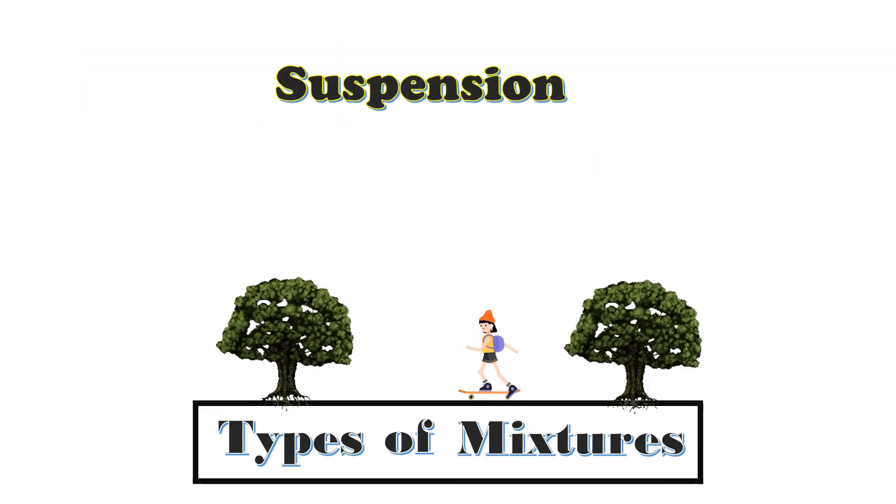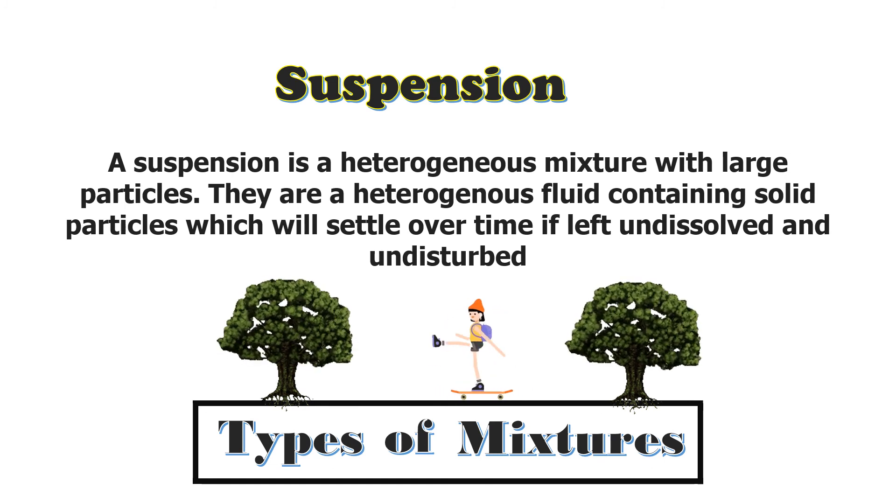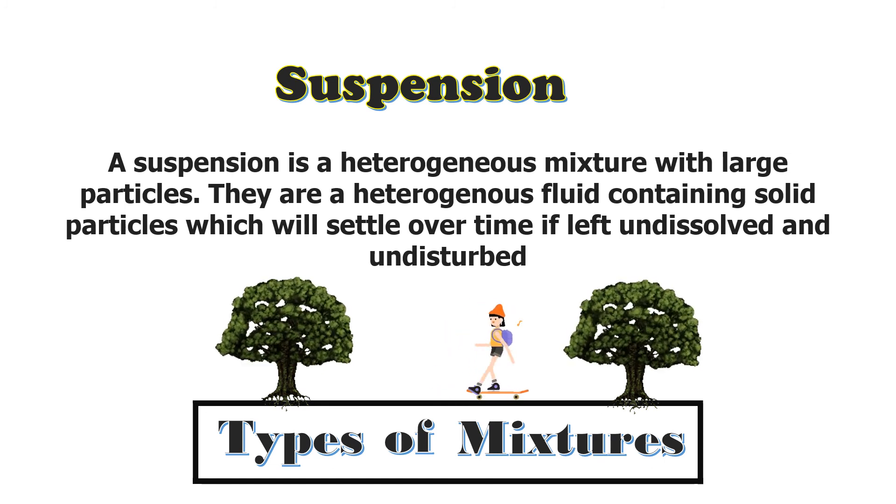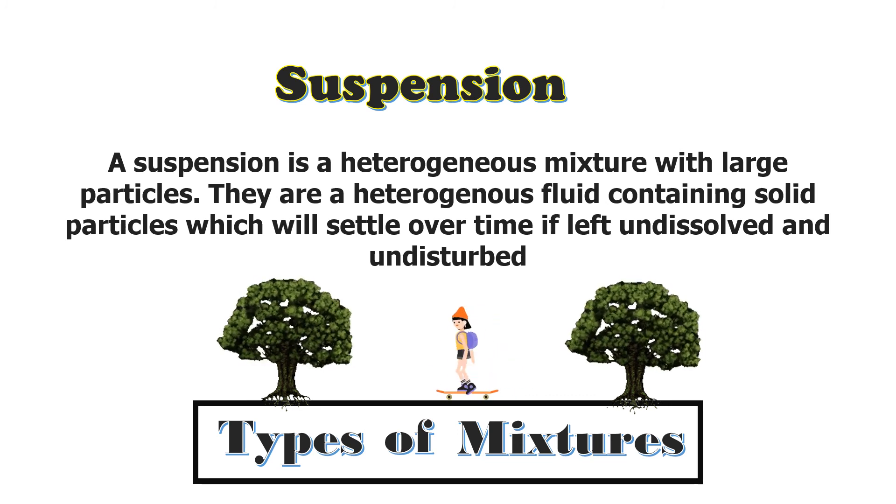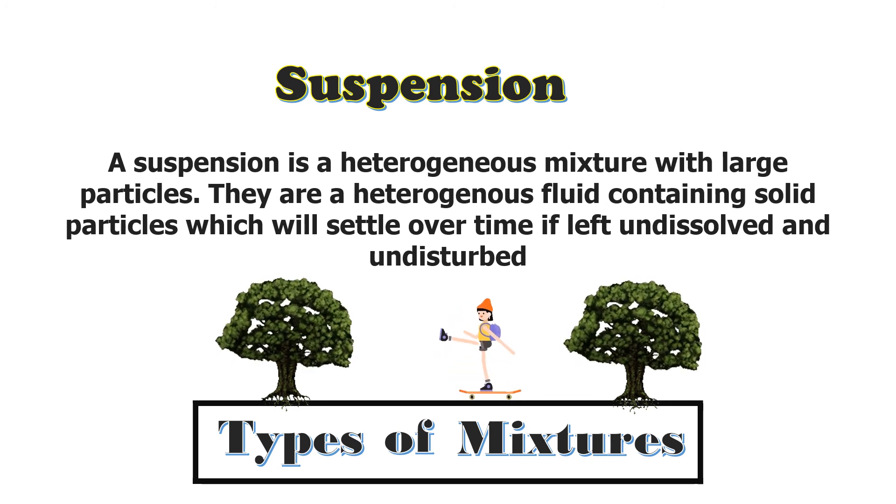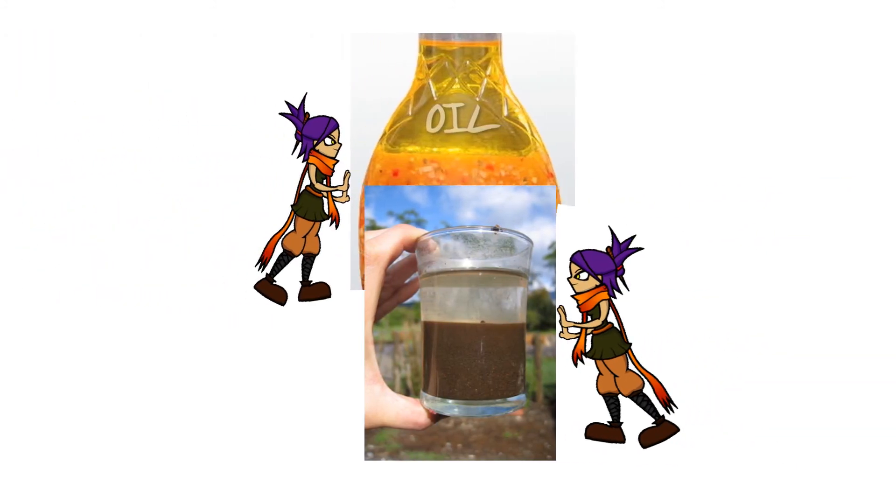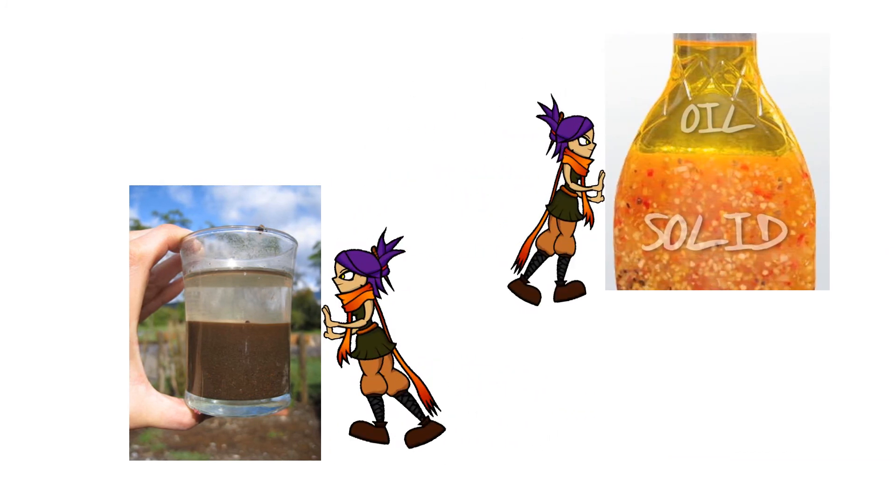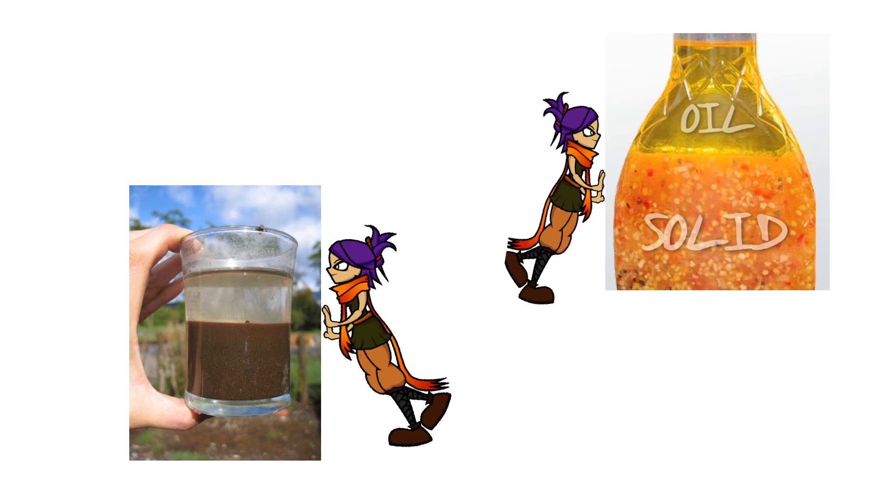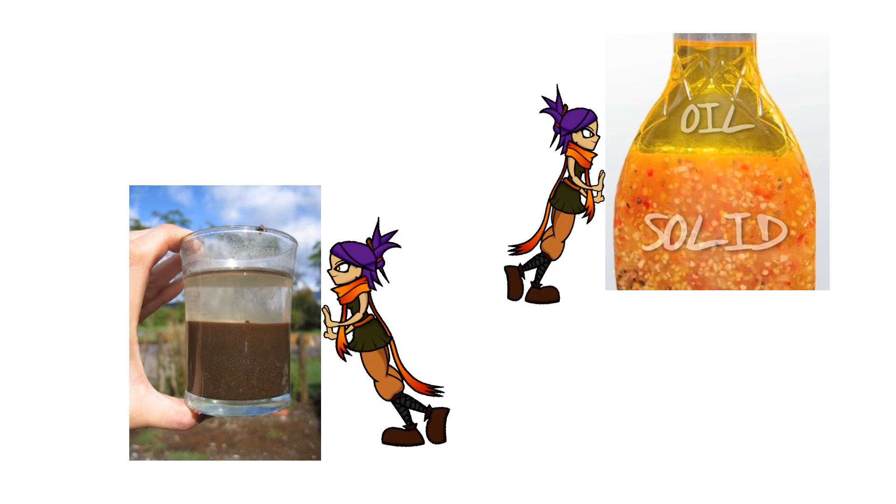Lastly, we have suspension. A suspension is a heterogeneous mixture with large particles. They are heterogeneous fluids containing solid particles which will settle over time if left undissolved and undisturbed. In our examples, both liquid substances contain solid substances that do not dissolve, which will eventually settle at the bottom after some time.